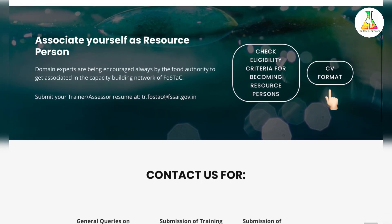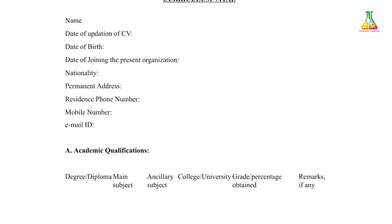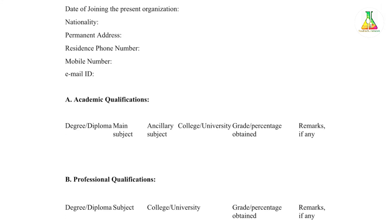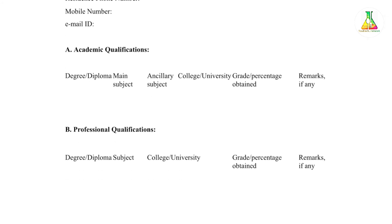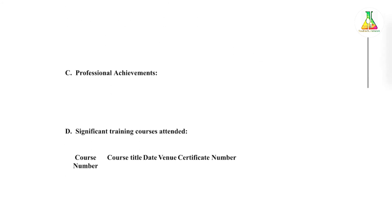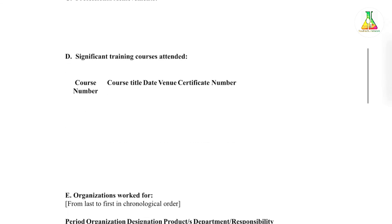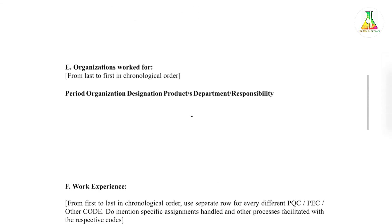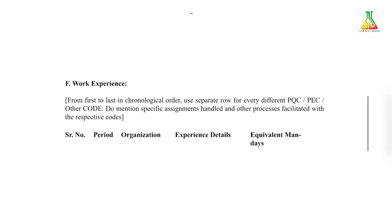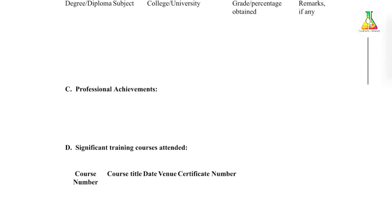Then for the CV format, you have to send your CV to tr.fostec@fssai.gov.in. The format of the CV requires: name, date of updation of CV, date of birth, date of joining the present organization, nationality, permanent address, residence phone number, mobile number, and email ID. You also need to fill in academic qualifications, professional qualifications, professional achievements, significant trainings attended, the organizations you worked for, and your work experience. In this format you have to prepare your CV and send it to tr.fostec@fssai.gov.in.